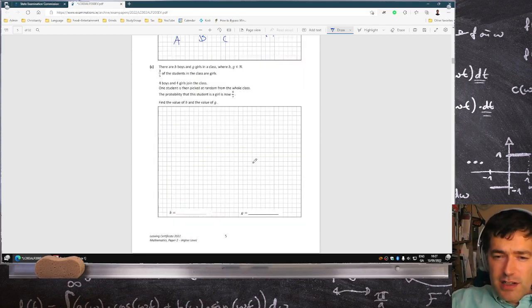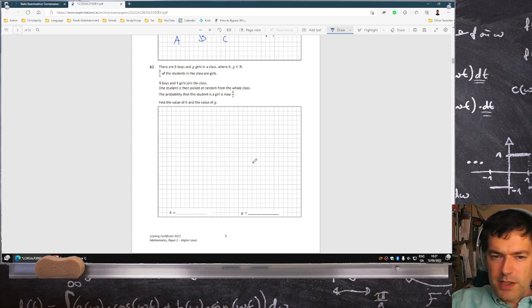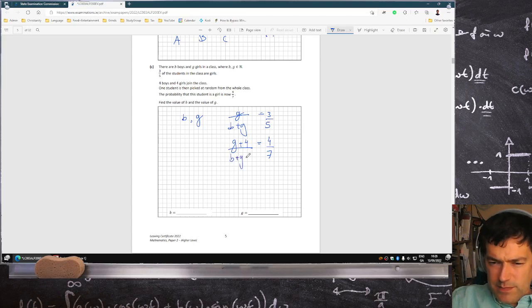There are b boys and g girls in the class. Three-fifths of the students in the class are girls. Four boys and four girls join the class. One student is then picked at random from the whole class. Find the probability that the student is a girl. Now it's four-sevenths. Find b and g. Okay, so there's b boys and g girls in a class, and three-fifths of the students in the class are girls, so that means girls over boys plus girls is three-fifths. Four boys and four girls join the class. One student is then picked at random from the whole class. The probability that the student is now a girl is four-sevenths, so it's now four-sevenths and there's an extra four, so adding four to both, it would be b plus g plus eight.